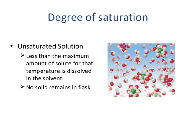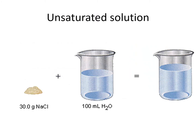Another degree of saturation is an unsaturated solution. In an unsaturated solution, less than the maximum amount of solute for that temperature is dissolved in the solvent — meaning no solid remains in the flask. For example, when 30 grams of sodium chloride is added to 100 mL of water and it forms into solution, there are no remaining particles or solutes at the bottom of the container, which means this solution is unsaturated.